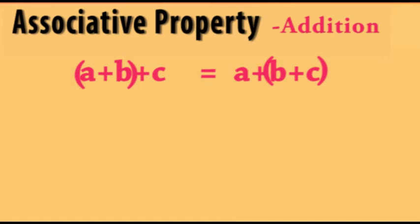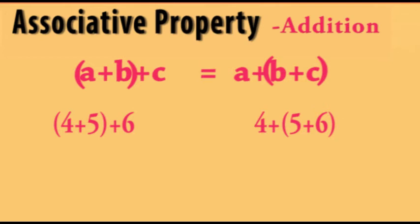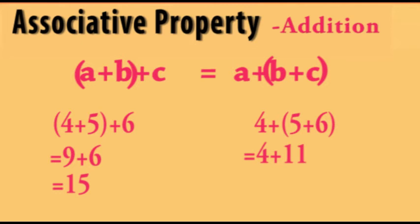For example, (4 plus 5) plus 6: we get 9 plus 6, which equals 15. Alternatively, 4 plus (5 plus 6): we get 4 plus 11, which is also equal to 15. Associative property can be represented as (a + b) + c = a + (b + c), and it is a closed operation.